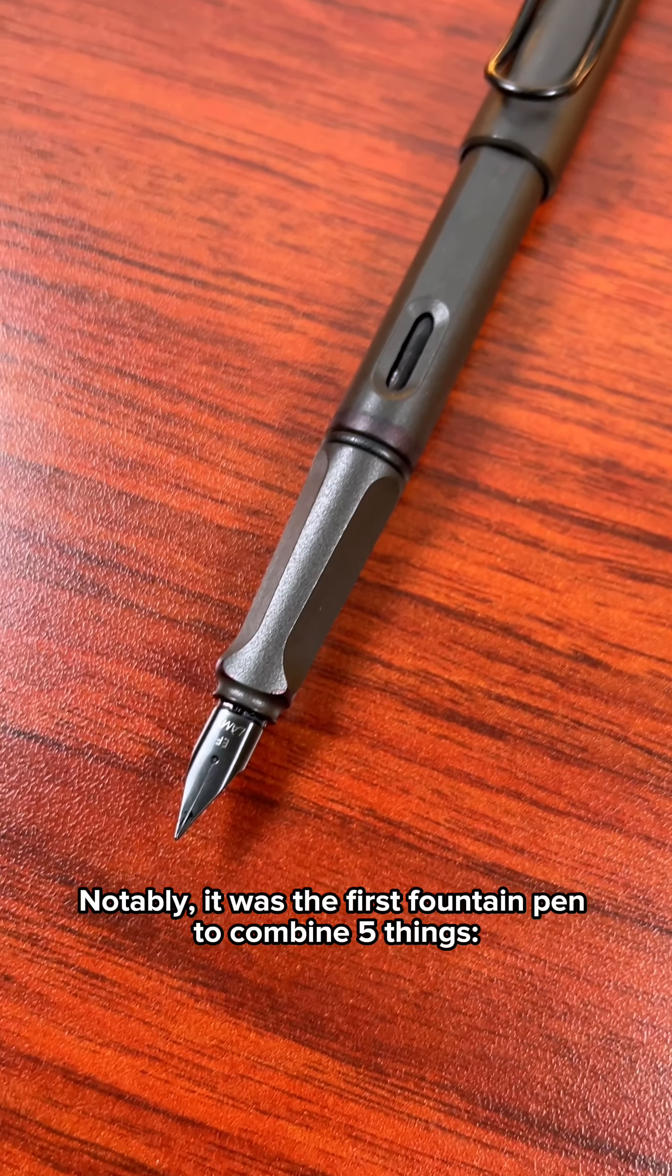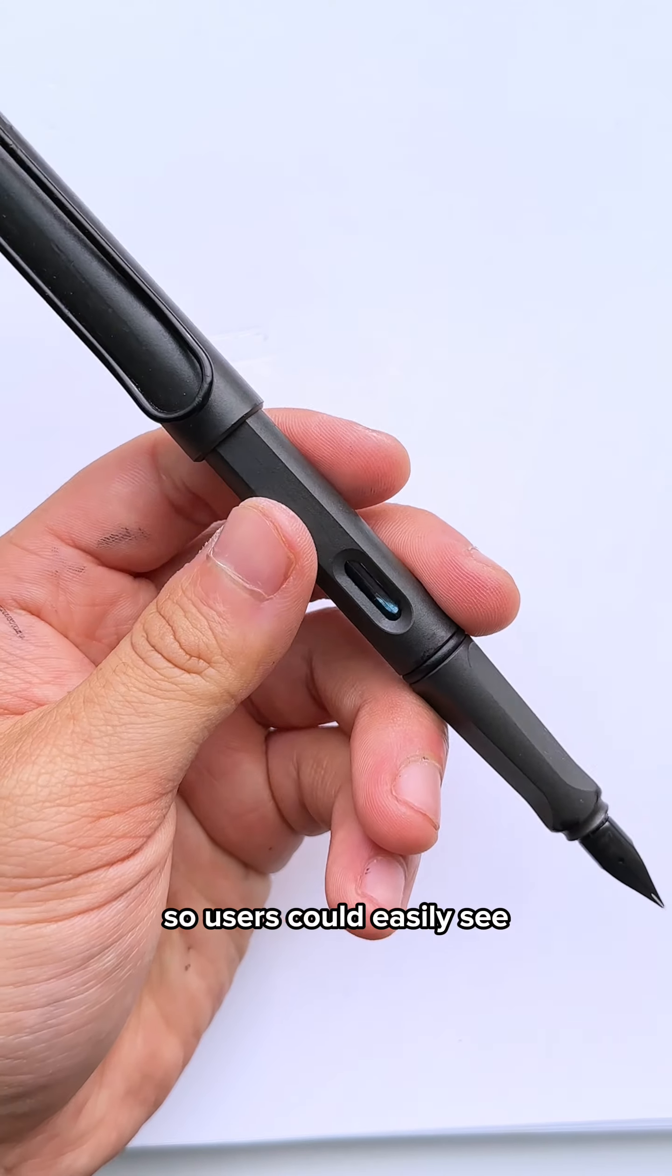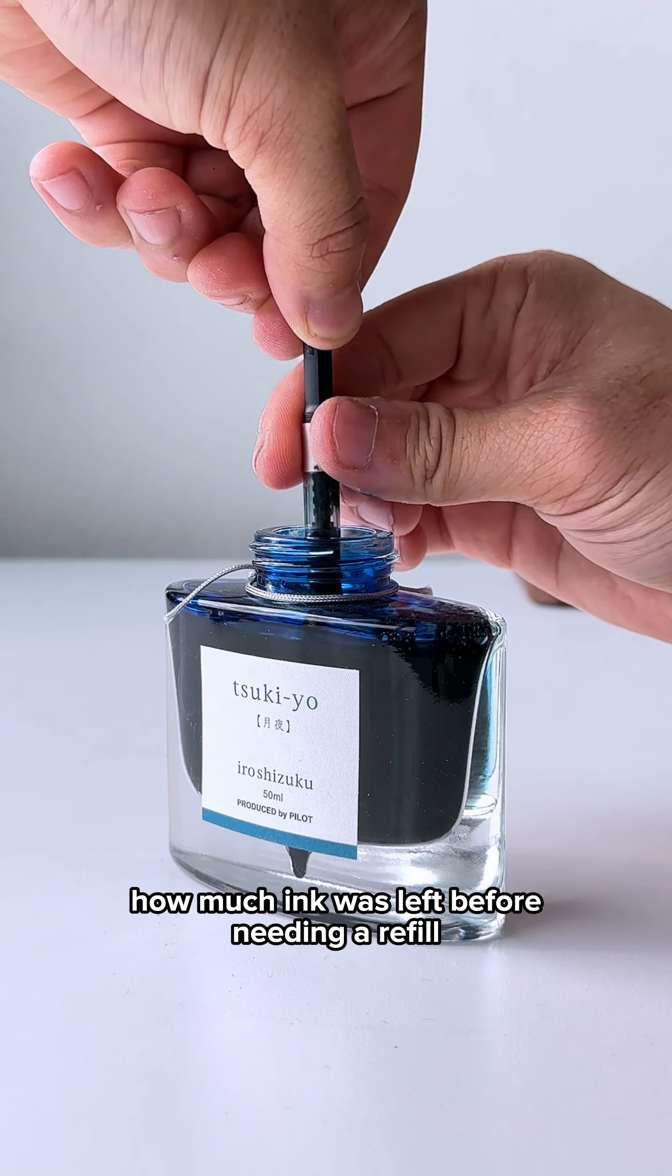Notably, it was the first fountain pen to combine five things. An ink window on the barrel so users could easily see how much ink was left before needing a refill,